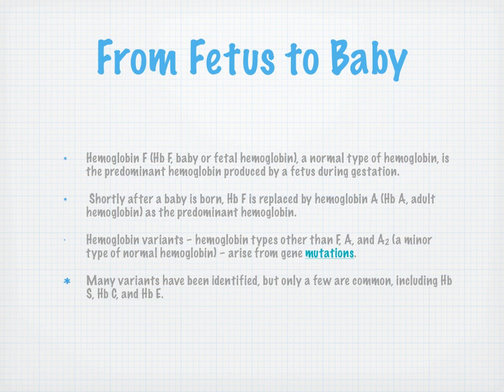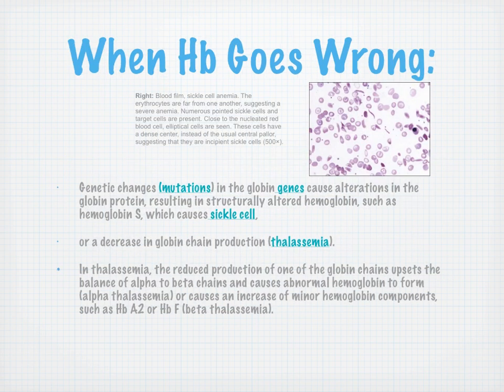Many variants have been identified, but the ones we're talking about include hemoglobin S for sickle cell, hemoglobin C, and hemoglobin E. Genetic mutations in the globin genes cause alterations in the globin protein, giving us structurally altered hemoglobin — hemoglobin S. A decrease in globin chain production will push toward an imbalance in the alpha and beta chains, and we end up with thalassemia: reduced production of one globin chain that upsets the balance of the other.